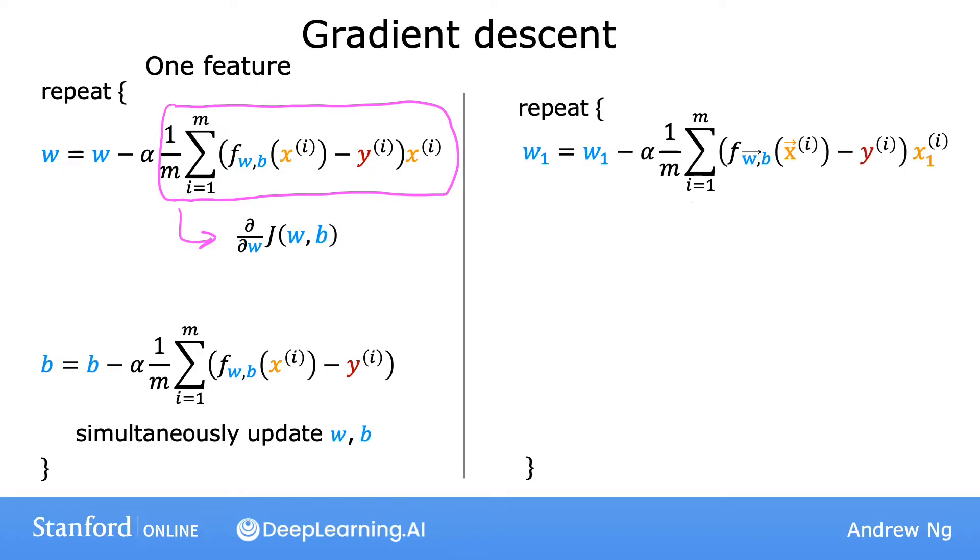Now here's the new notation for when we have n features where n is 2 or more. We get this update rule for gradient descent. Update w1 to be w1 minus alpha times this expression here.